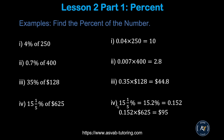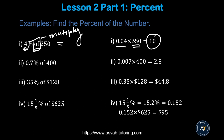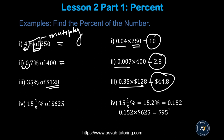Now we'll find the percent of a number. For example: four percent of 250. The keyword 'of' means multiply. So convert the percent to decimal — move two decimal places — then multiply: 0.04 times 250 gives you 10. Make sure you know the fundamentals of decimal multiplication from the previous lesson. Similarly, 0.7% of 400: move two decimal places to get 0.007, then multiply to get 2.8. And 35% of 120 works the same way.